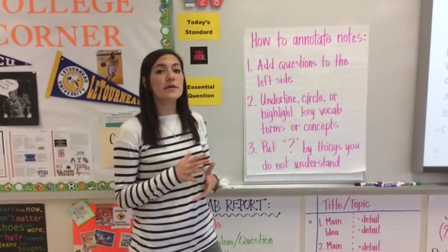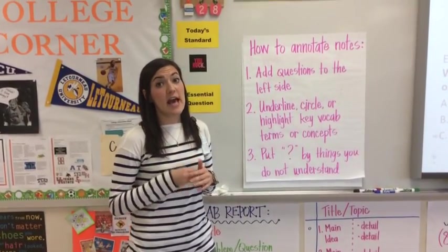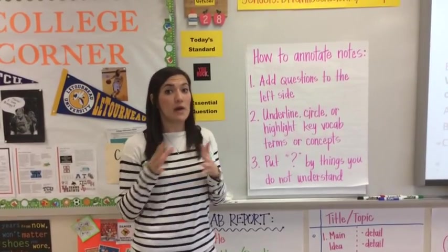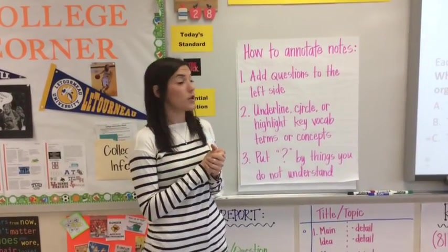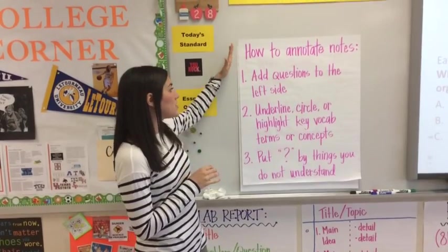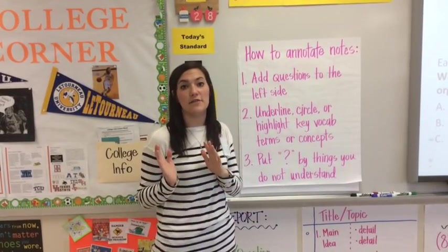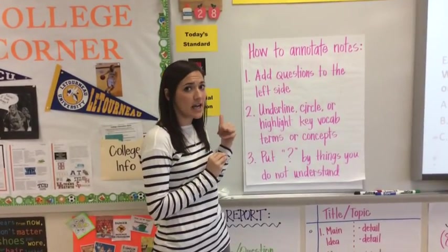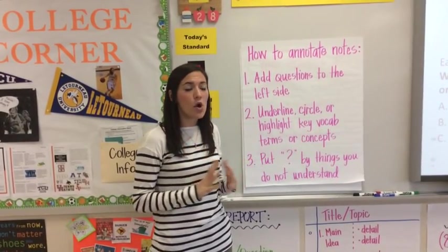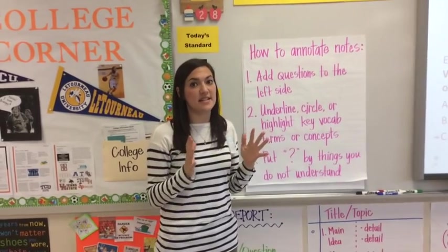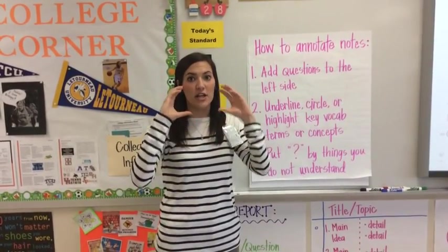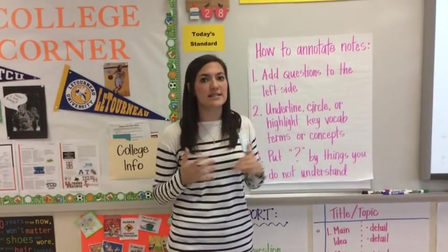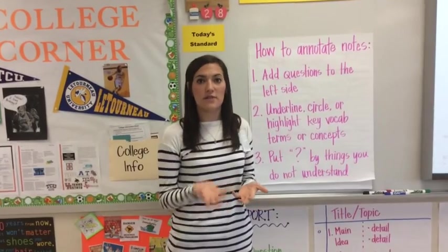So the first thing we need to talk about is a few ways for you to annotate your notes. And then once we talk about these, we'll begin the actual homework video and you will annotate the Cornell notes that you have out. One, add questions to the left hand side of your notes. On the right hand side, you write all the details. On the left hand side, you should write big questions or topic sentences that kind of cover all the information in one section of your notes. So add in some questions like what is DNA, what is a mutation, things like that.